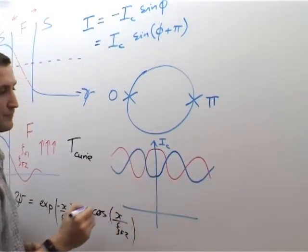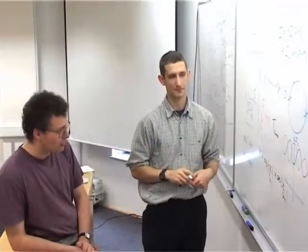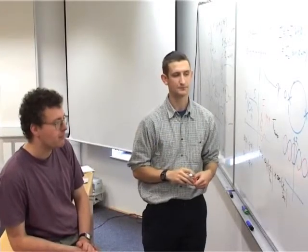So if we can be really sure we've got zero magnetic field, we can see whether we've got a π junction or not a π junction, depending on whether we have a minimum or a maximum in the critical current. Yeah, exactly.